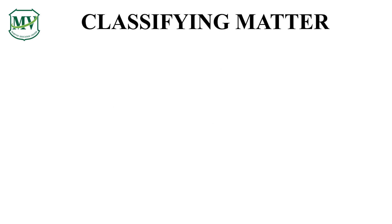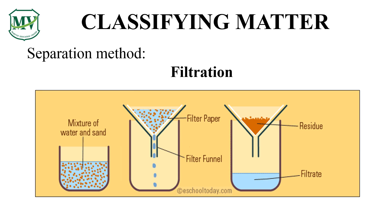Here's another technique in separating mixtures — it's called filtration. This method is for separating an insoluble solid from a liquid. When a mixture of sand and water is filtered, the sand stays behind in the filter paper and becomes the residue. The water passes through the filter paper and becomes the filtrate. You have just separated the water from the sand.